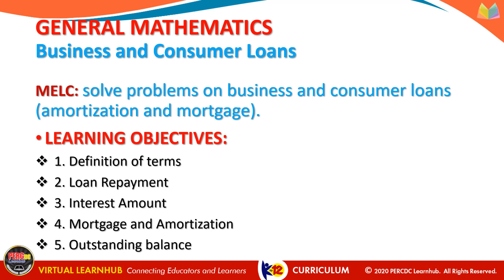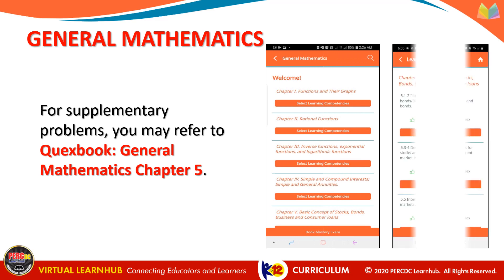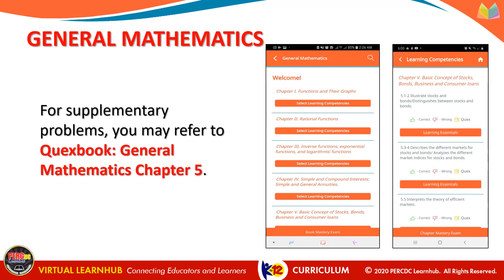What we learned in this business and consumer loans discussion: we solved problems on business and consumer loans and defined different terms including loan repayment, interest amount, mortgage and amortization, and outstanding balance. For supplementary problems, you may refer to the textbook General Mathematics, Chapter 5. Thank you and have a nice day.